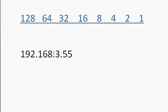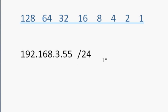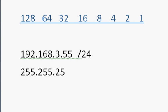So here I've got an IP address: 192.168.3.55 — an IPv4 address. In the CCNA you'll often see it written with a slash 24, like 192.168.3.55/24. What does the slash 24 mean? It's shorthand for the subnet mask, or net mask, which in this case would be 255.255.255.0.